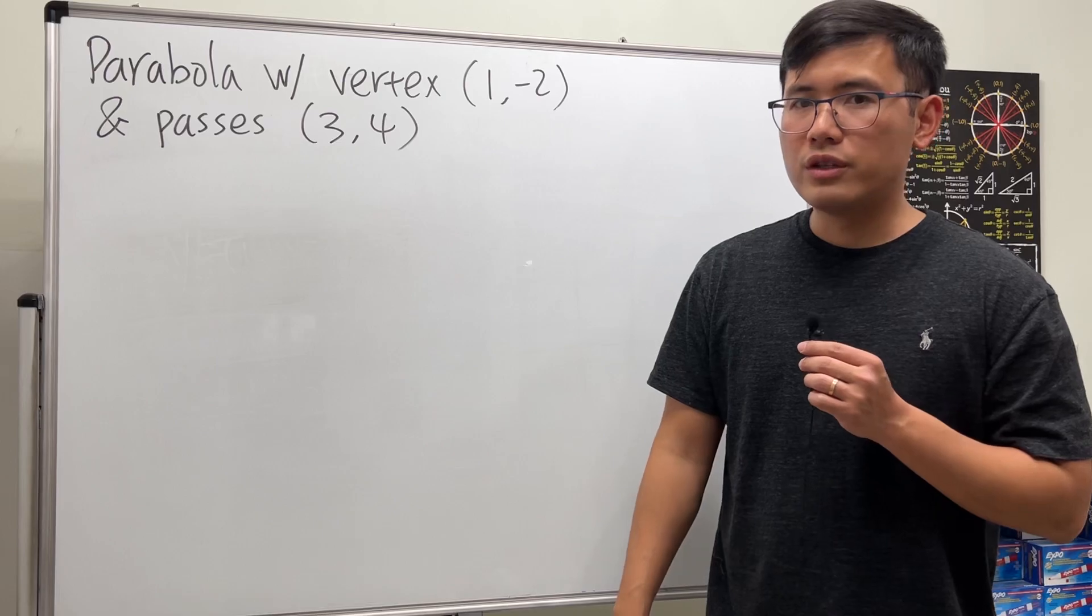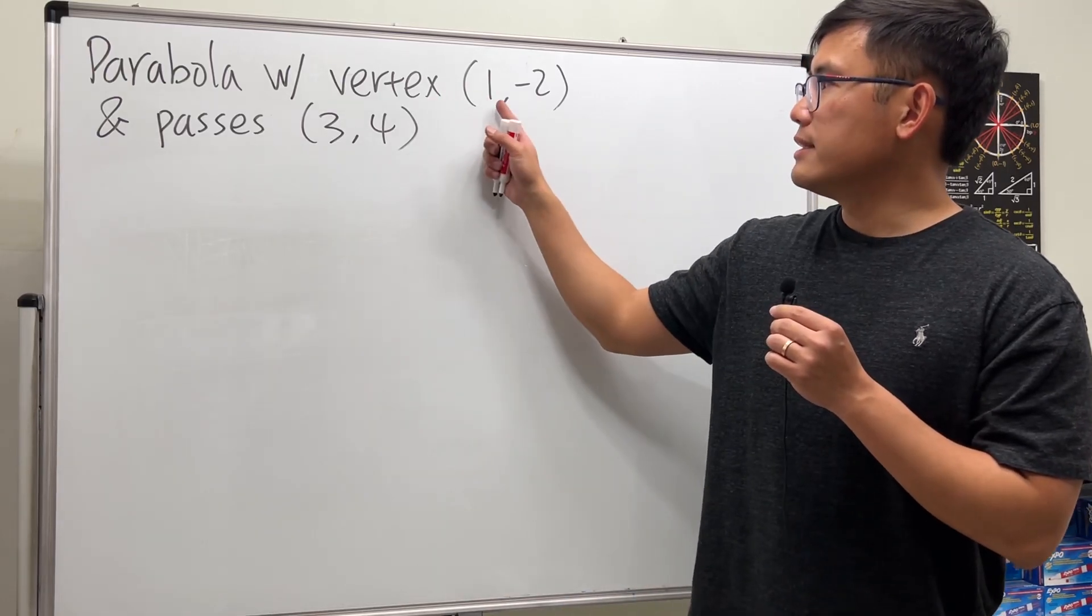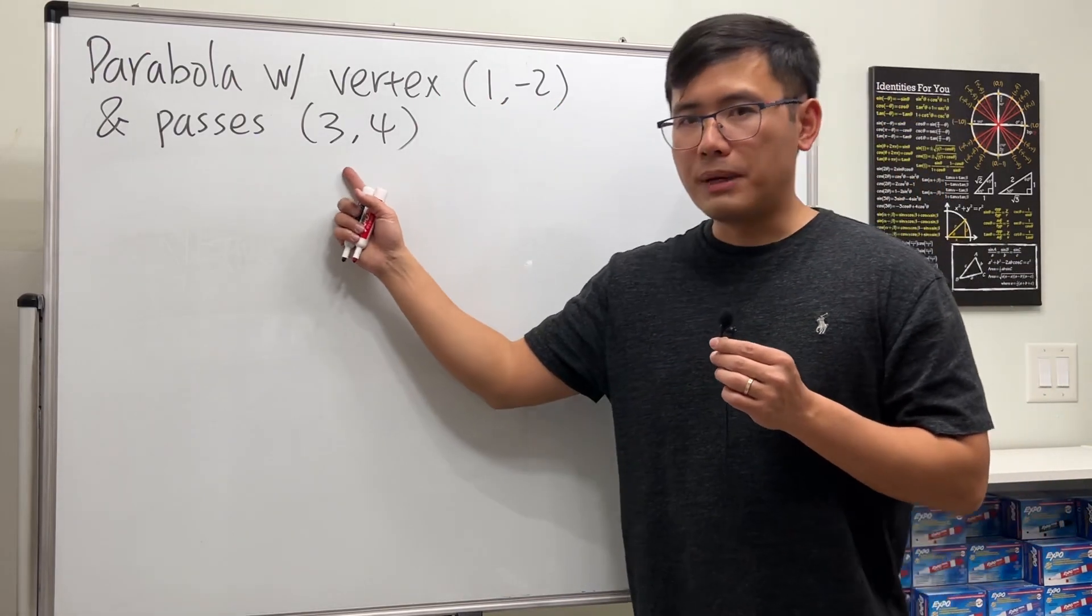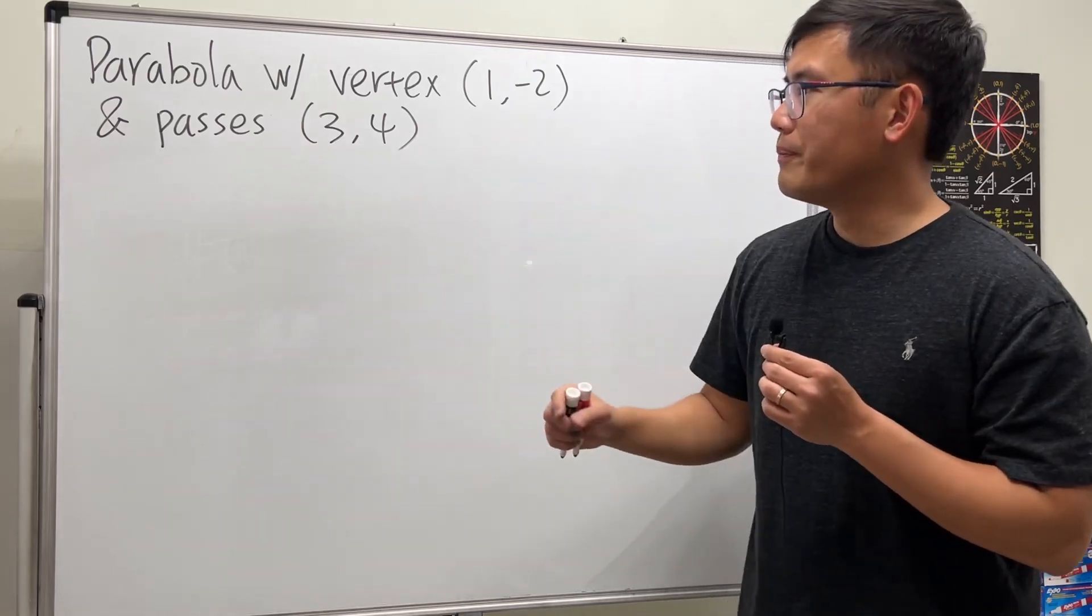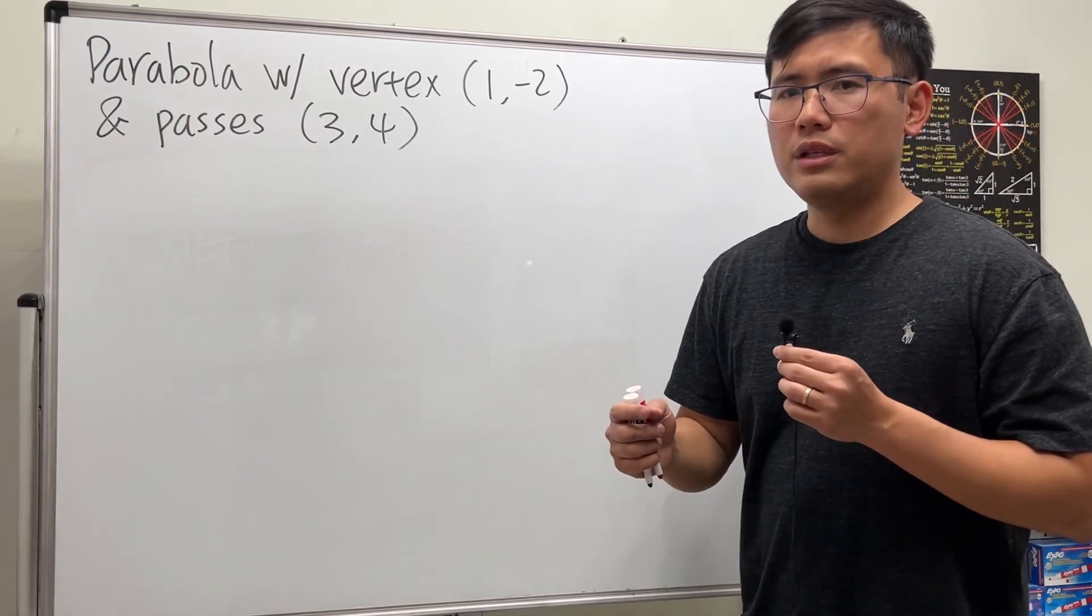Here we'll see how to write an equation of a parabola with vertex at 1 comma negative 2 and also passes through the point 3 comma 4. Because we have the vertex already, we should start by using the vertex form of a parabola.